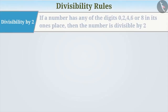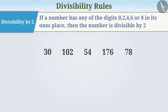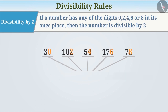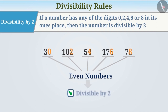Divisibility by 2: If a number has any of the digits 0, 2, 4, 6 or 8 in its ones place, then the number is divisible by 2. This is because if the last digit of the number is 0, 2, 4, 6 or 8, then that number will be an even number, and every even number is divisible by 2. Therefore, for divisibility by 2, the last digit of the number must be even.